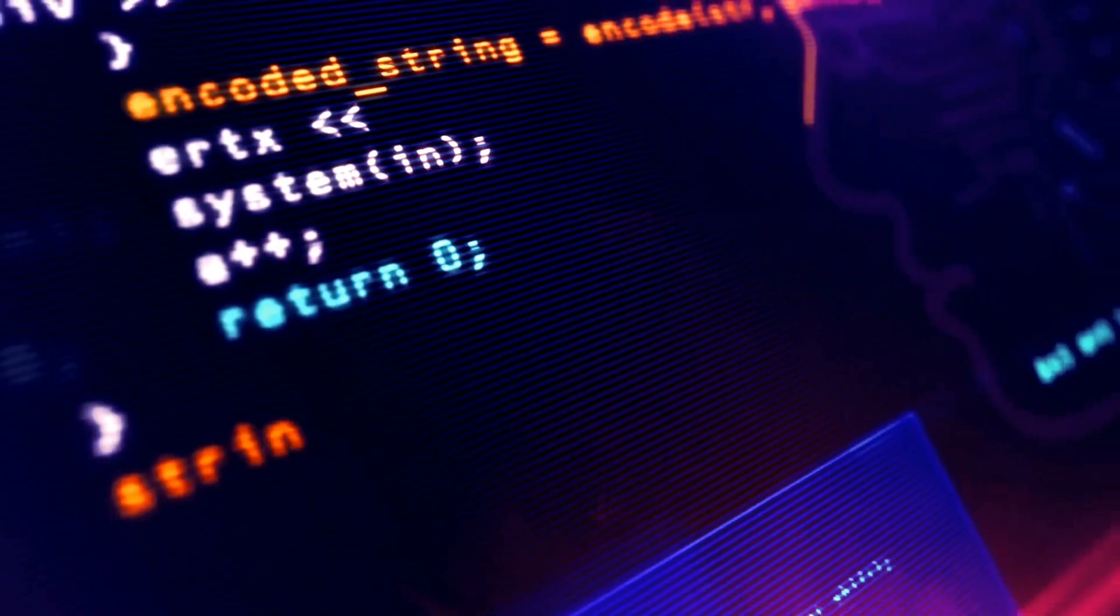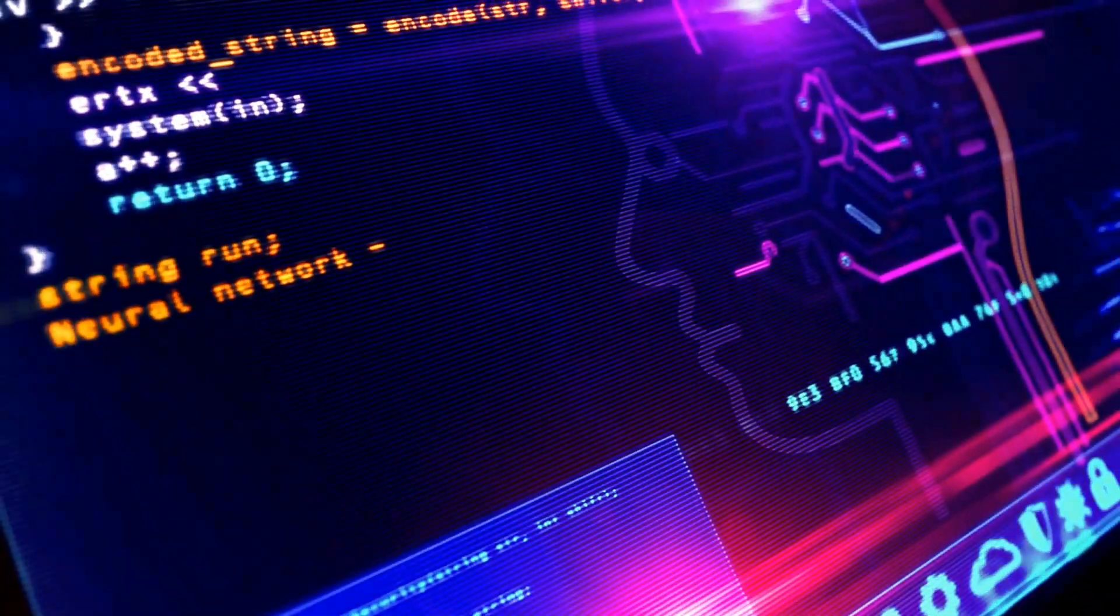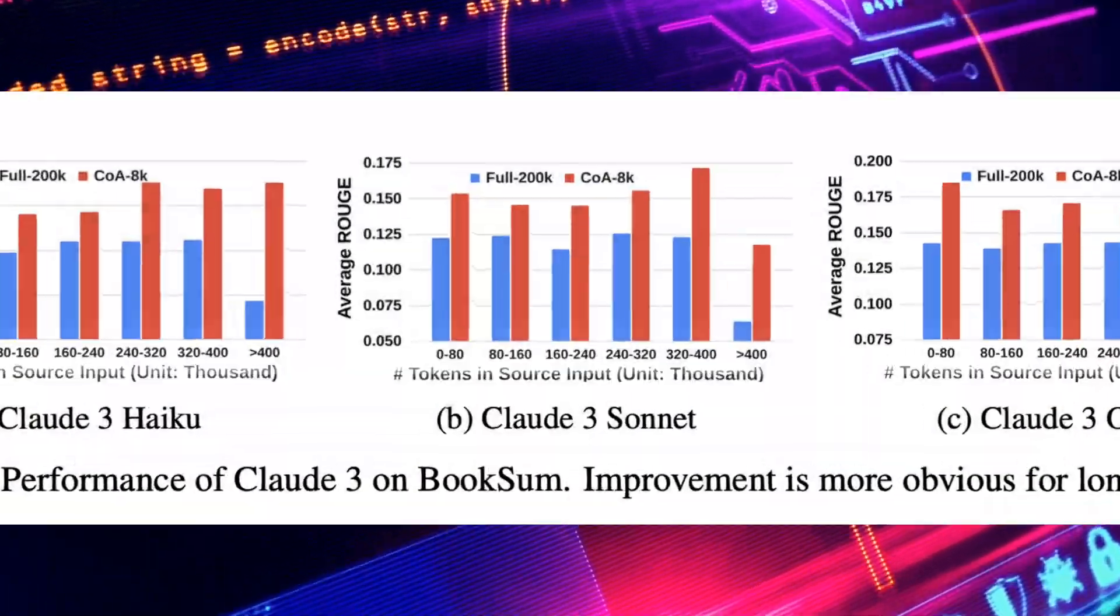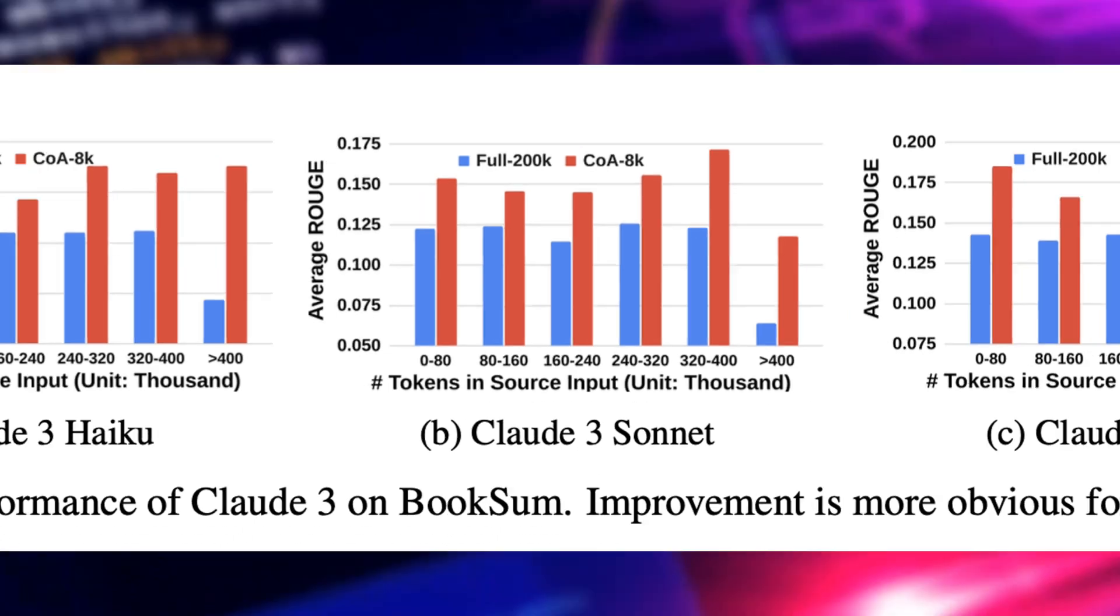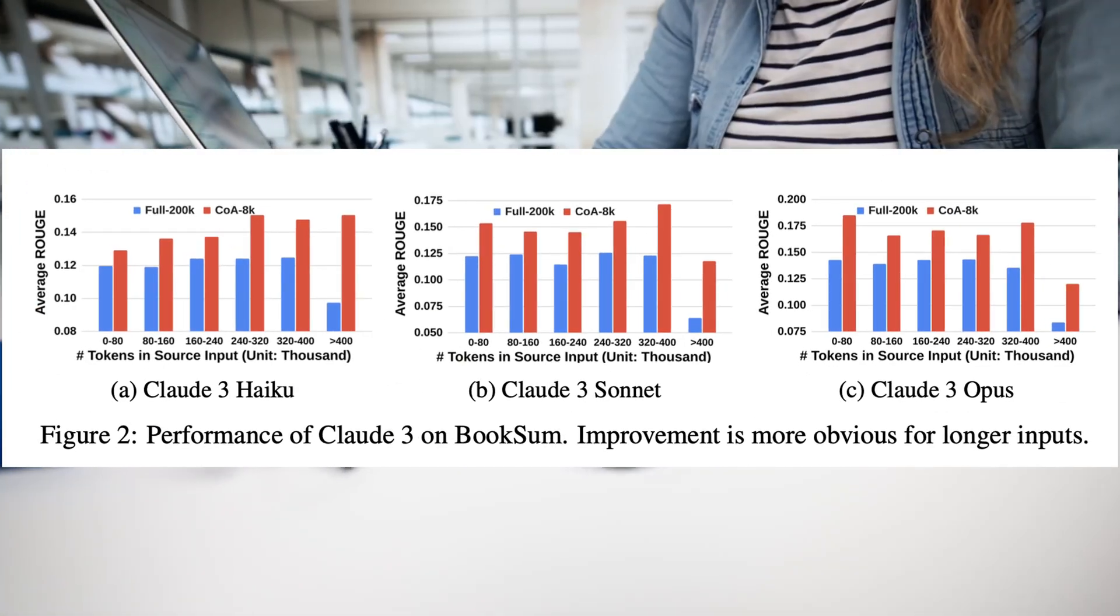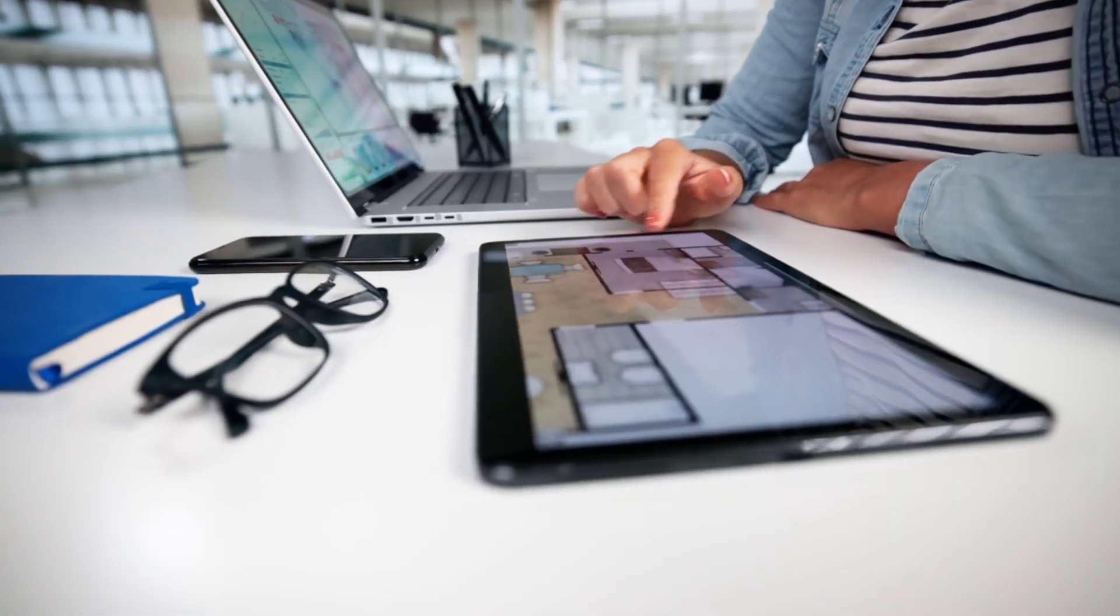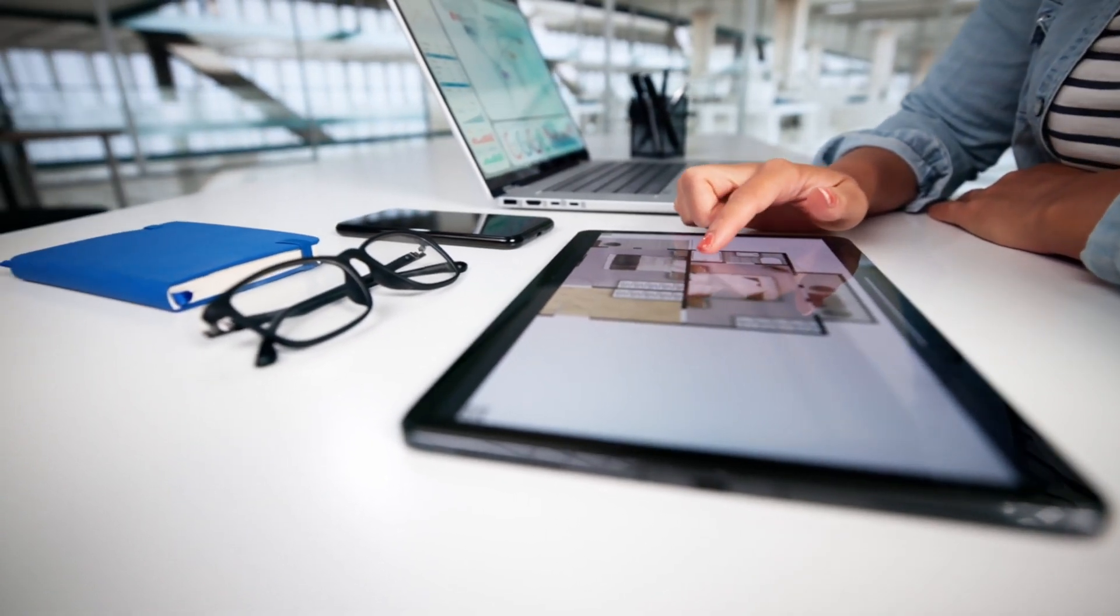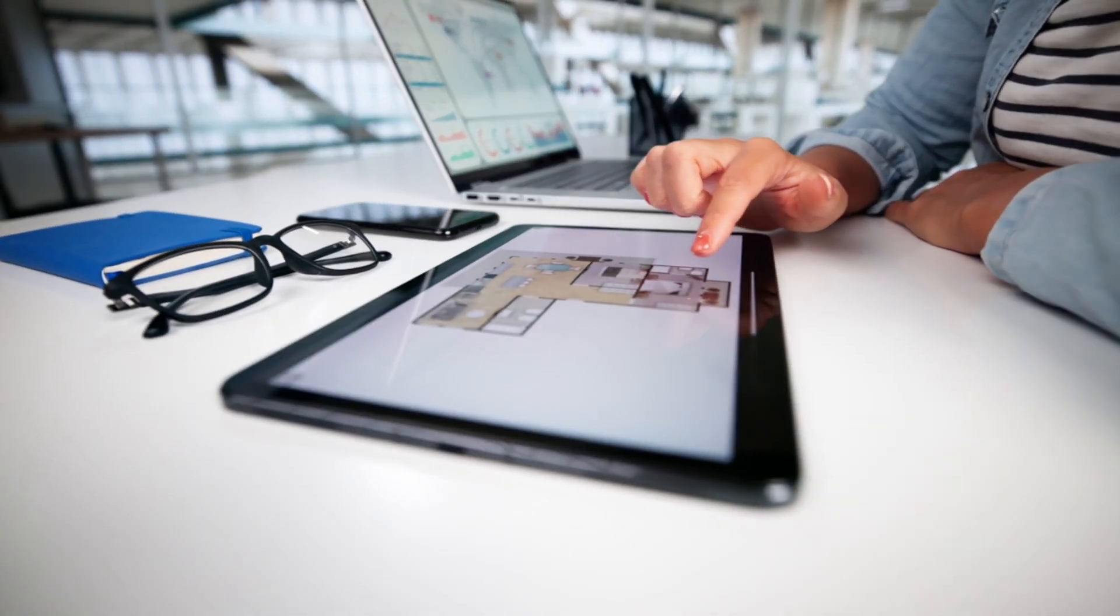This mirrors how expanding the token limit of models, as seen in systems like LOD3 enables processing longer inputs. Nevertheless, models struggle to focus effectively within extended contexts, leading to inefficient utilization, often referred to as the lost-in-the-middle phenomenon.